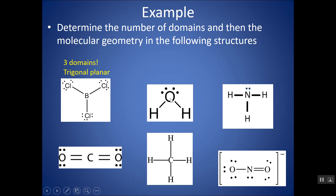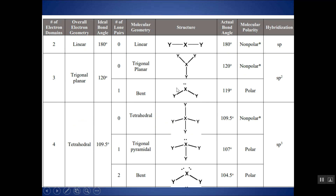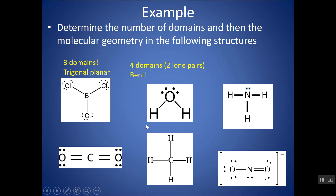Going across, here's water. There's one, two, three, four domains — each lone pair counts as one and each bond of any sort counts as one. So there are four domains, and there are two lone pairs. Four domains, two lone pairs — water is bent. That's why when we talk about water being polar, it's because of this bent structure, which gives it its polarity. We'll have another video about polarity.